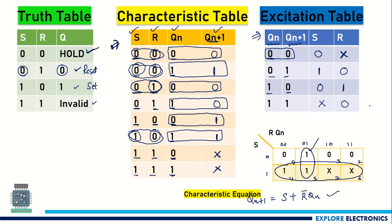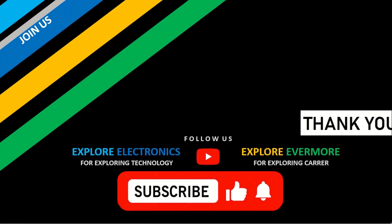Using this excitation table and the characteristic table, we can convert one flip-flop to another. When converting the SR flip-flop into another type, we use the excitation table to determine what inputs are required to achieve the expected output. The excitation table is very important and can be memorized for direct use in further applications. Thank you.